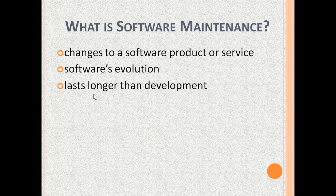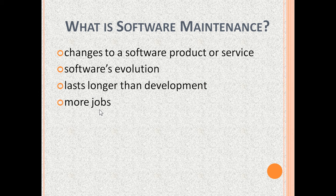Software maintenance lasts longer than software development. For example, the development may last 1 year, but the maintenance may last for 5 to 10 years. This is because organizations want to get the most return on investment in software development. For the same reason, there are more jobs in software maintenance than in software development.